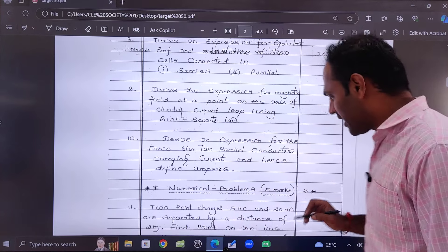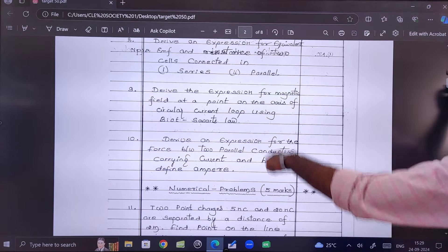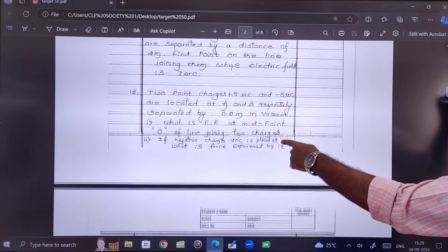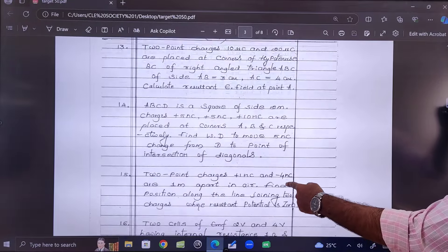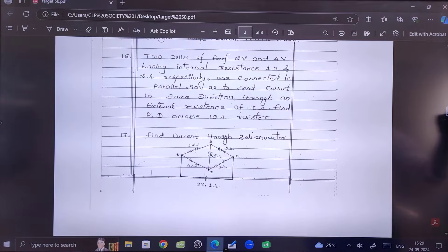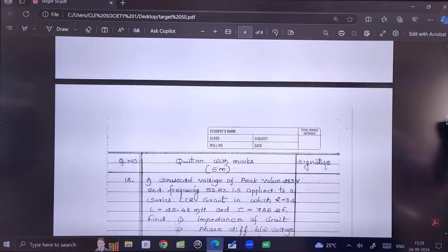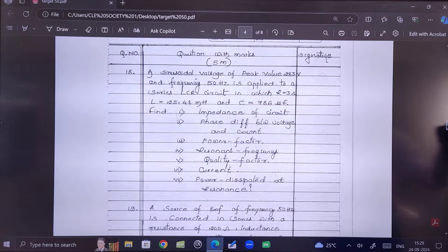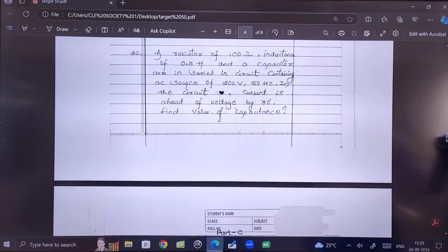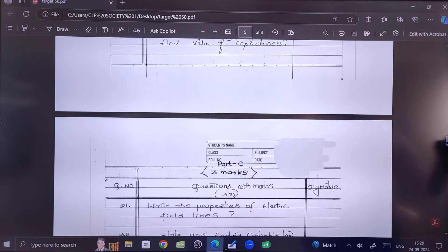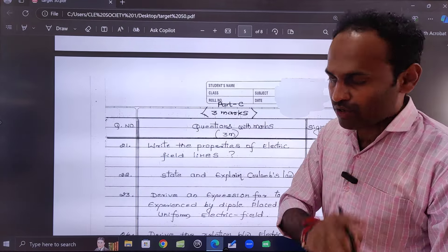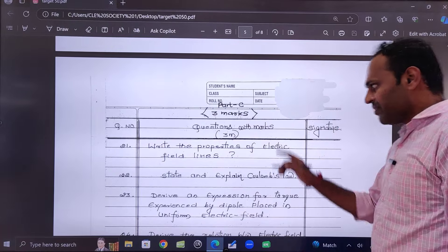These are the five mark numericals you should practice. After the five mark numericals, there are problems on AC circuits. These are the problems on AC current electricity. You will get numericals on both current electricity and AC. Current electricity has minimum numericals. Then three marks questions are listed.